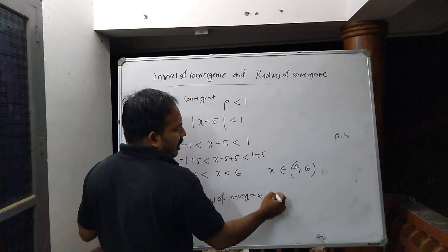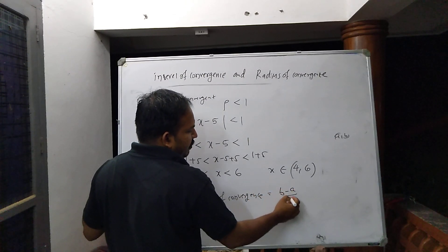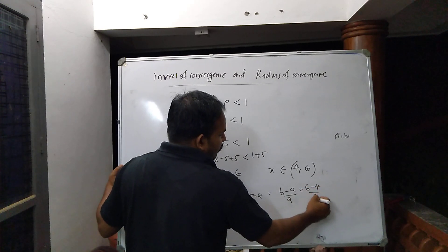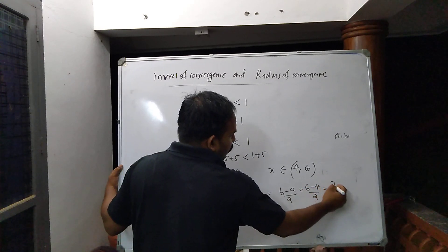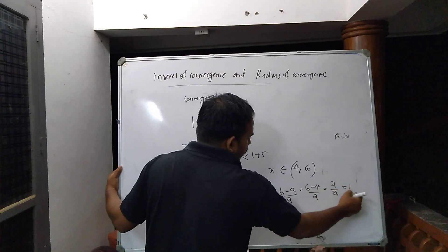The radius of convergence R equals (b minus a) divided by 2, which is (6 minus 4) divided by 2, equals 2 divided by 2, which equals 1. So the radius of convergence is R equals 1.